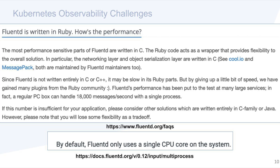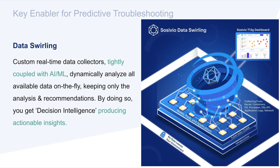In summary, the traditional method of collecting and storing mass amounts of data to analyze after an issue has occurred is limiting the full potential and scale of cloud-native applications. Sasevio believes the traditional monitoring systems used in Kubernetes provide limited value due to the reliance on inaccurate data and requiring an expert to determine what is actually happening in your environment. The challenge now is how do we break through this legacy approach and evolve along with modern technology, ensuring that we can successfully get insights into our environments. One way to break this legacy approach is with a new novel methodology: data swirling.